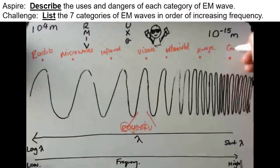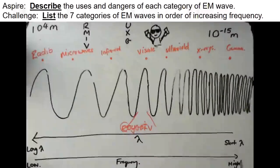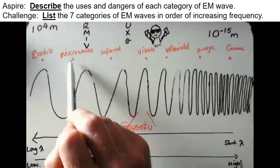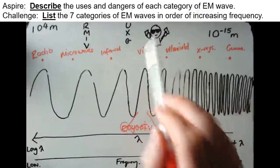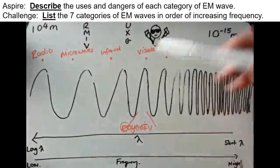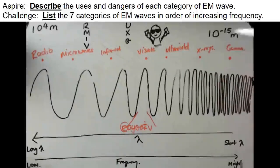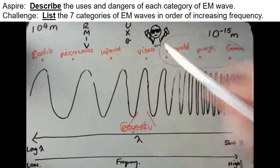So you need to know those seven categories. Radio has the longest wavelength, the lowest frequency, and the lowest energy. Then microwaves, then infrared, then visible light — made up of red, orange, yellow, green, blue, indigo, and violet. Then ultraviolet, then x-rays, then gamma. By the time we get to gamma, these waves have a very short wavelength, very high frequency, and they transfer a lot of energy, which makes them very dangerous. X-rays and ultraviolet are also dangerous. These are the more dangerous waves.